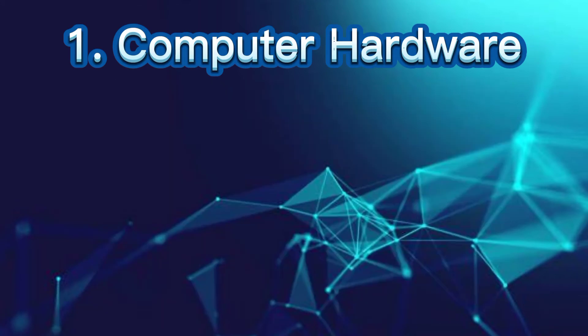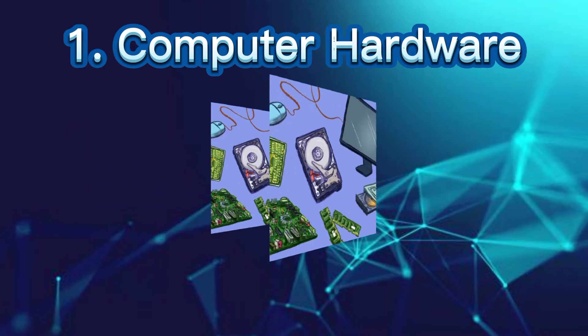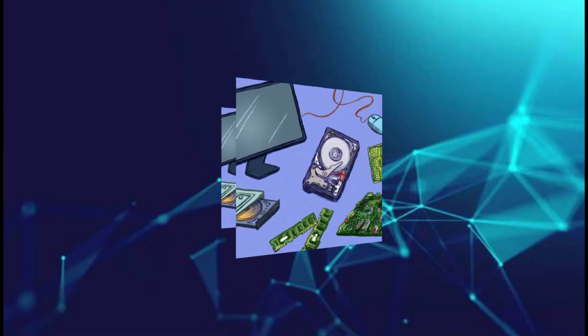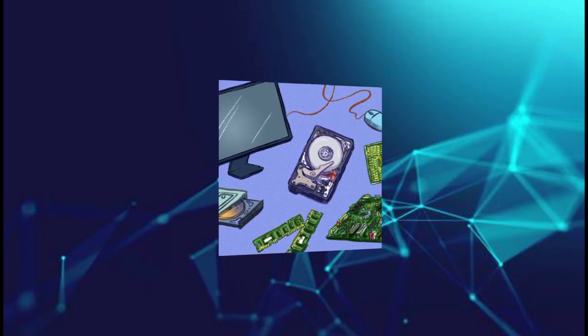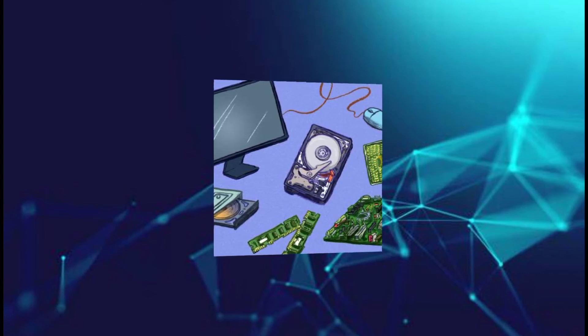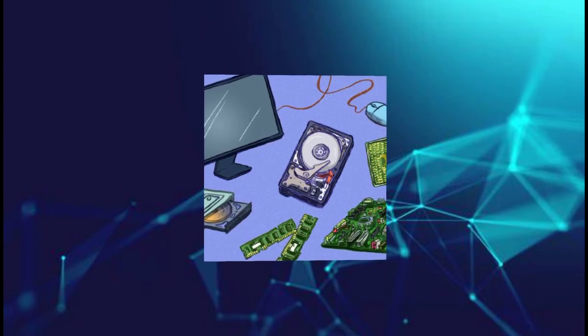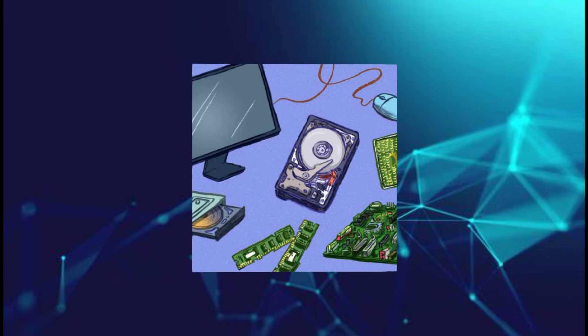Computer hardware is the physical technology that works with information. It can be as small as a smartphone, which easily fits within a pocket, or as large as a supercomputer that fills a building. This also includes the peripheral devices that work with computers, such as input devices, output devices, storage devices, and telecommunications devices.